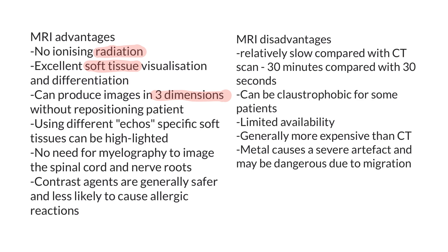In MRI, you can also use different echoes to highlight specific soft tissues. A really big advantage is that you don't need to use myelography in order to image the spinal cord and nerve roots, although we do thousands of myelographic CT scans and haven't had any major issues. Contrast agents in MRI are also less likely to cause side effects, complications, or allergic reactions.